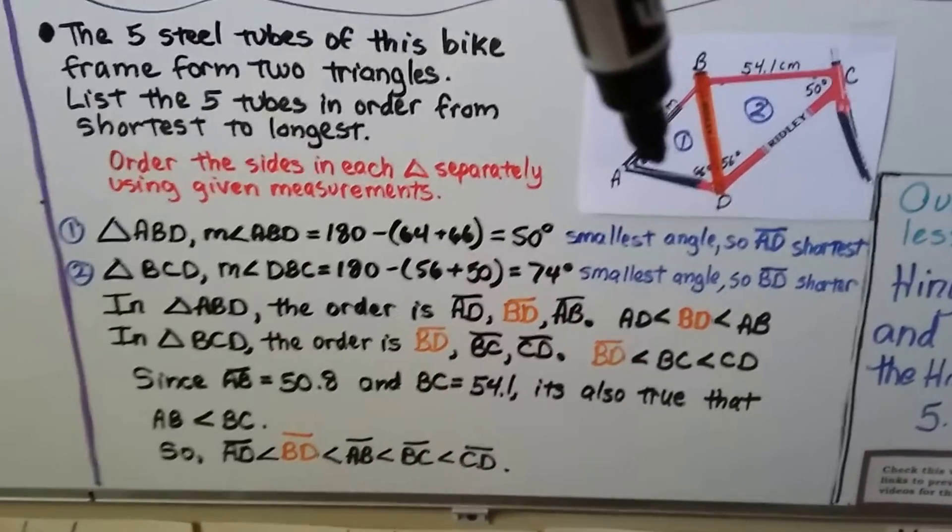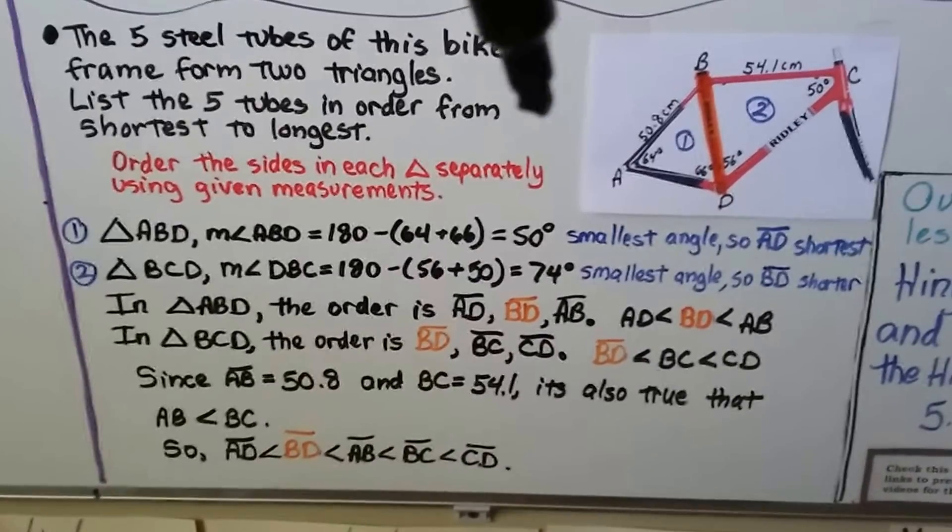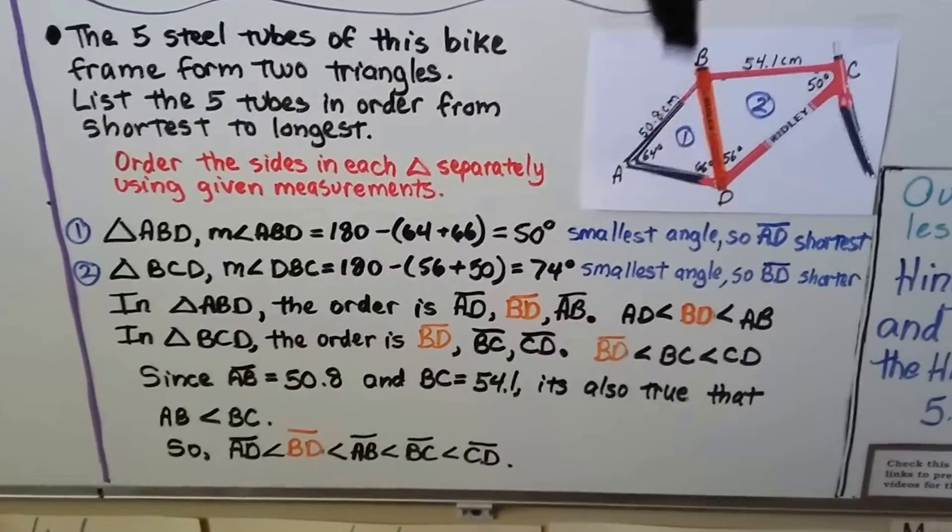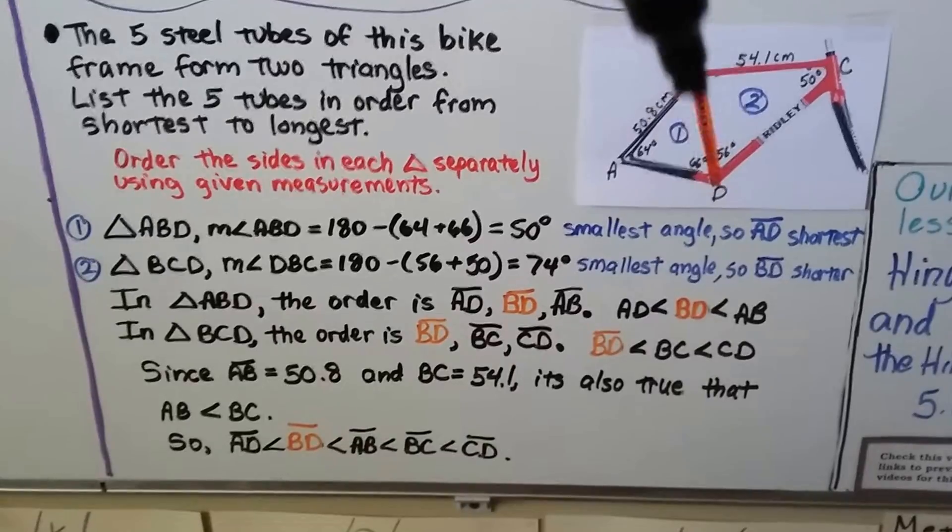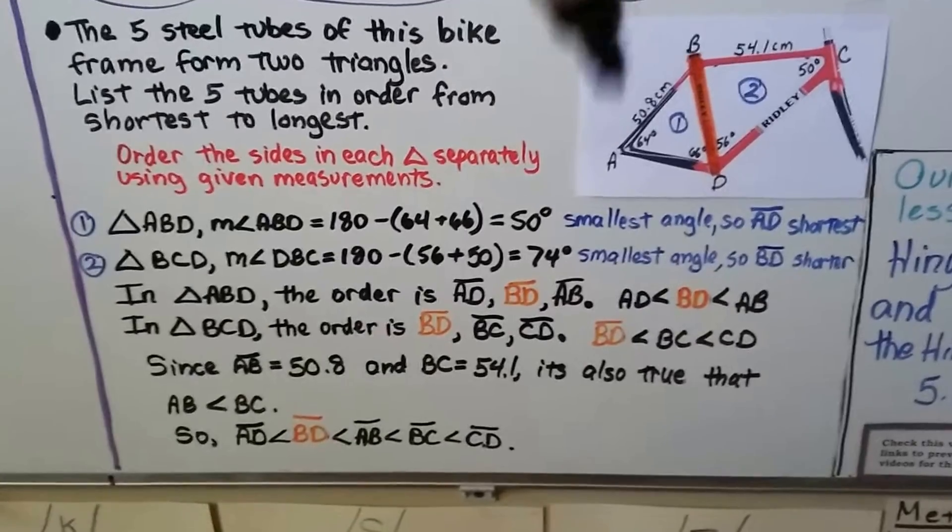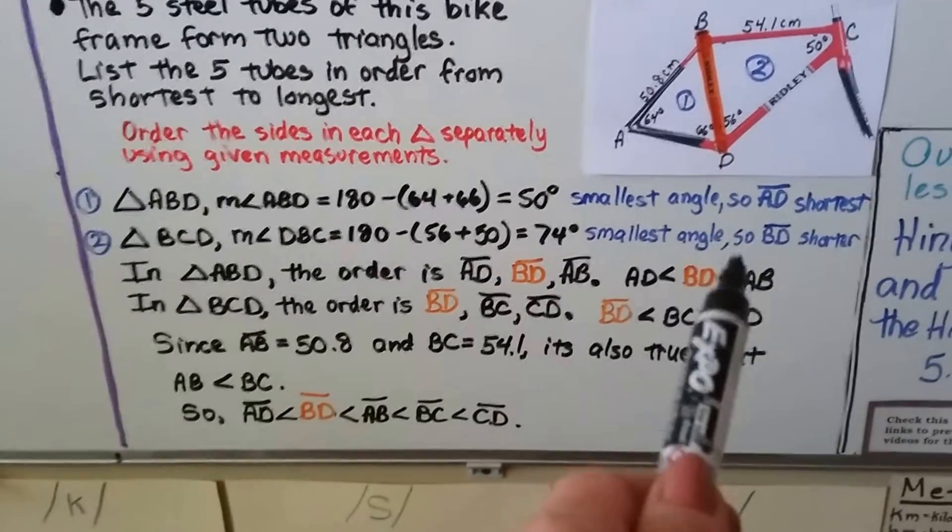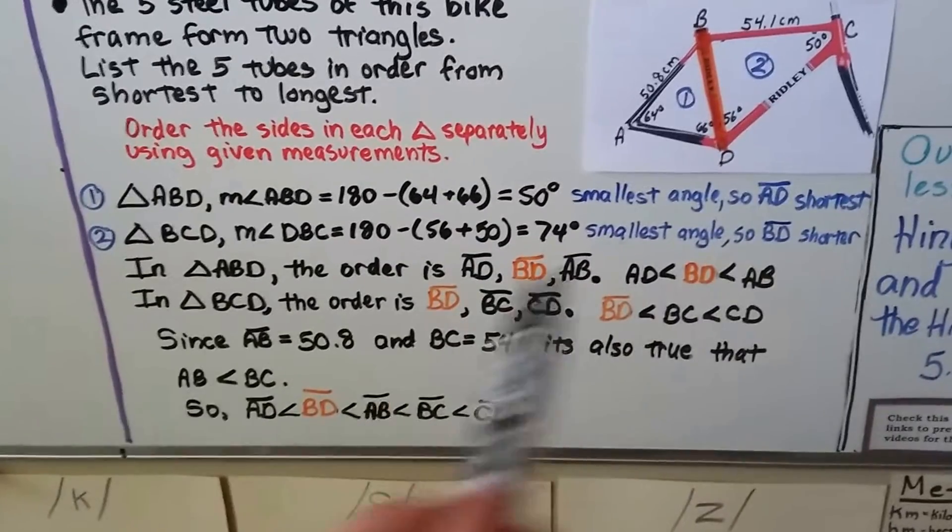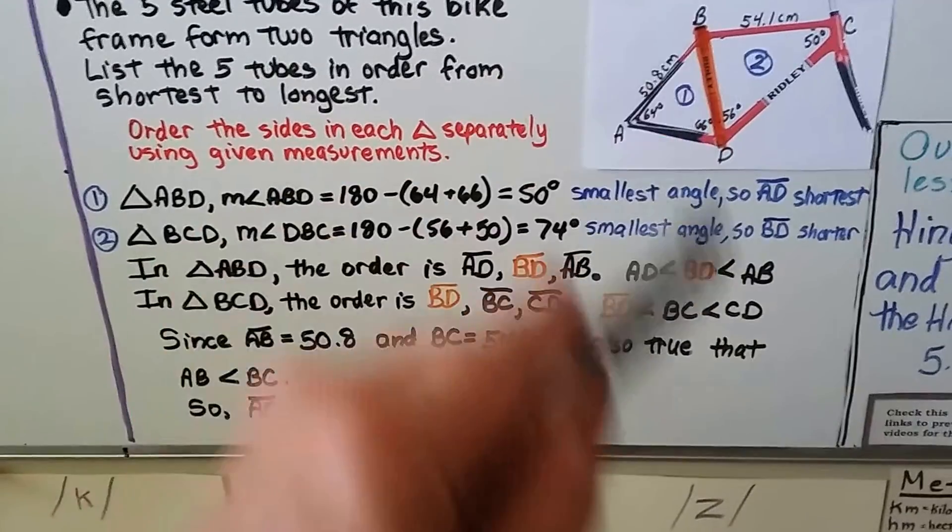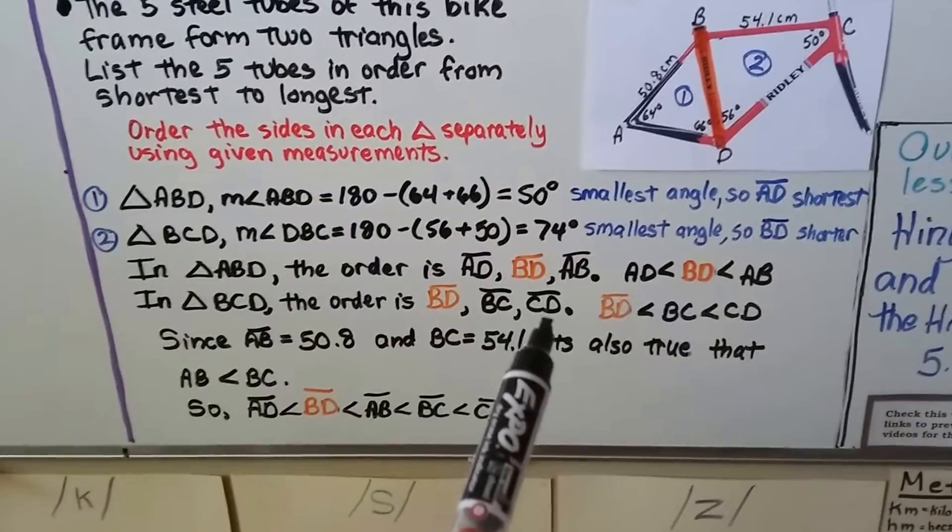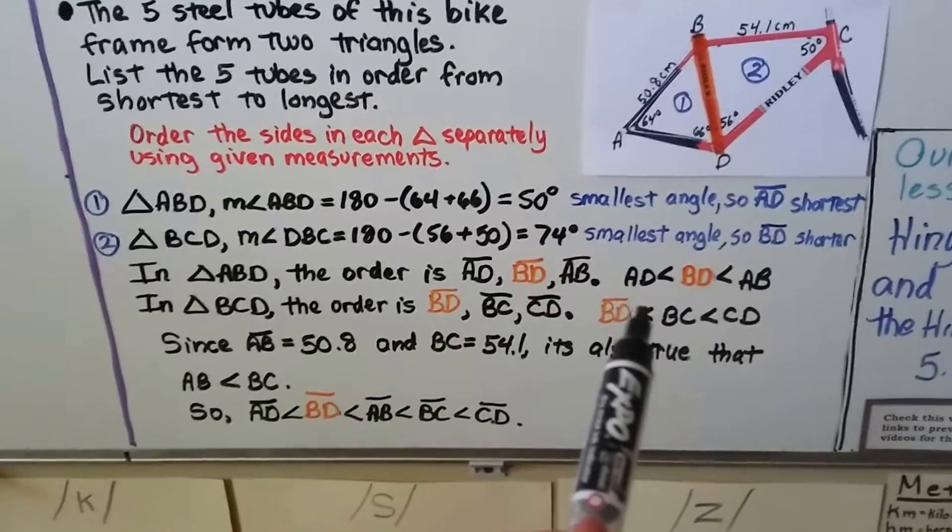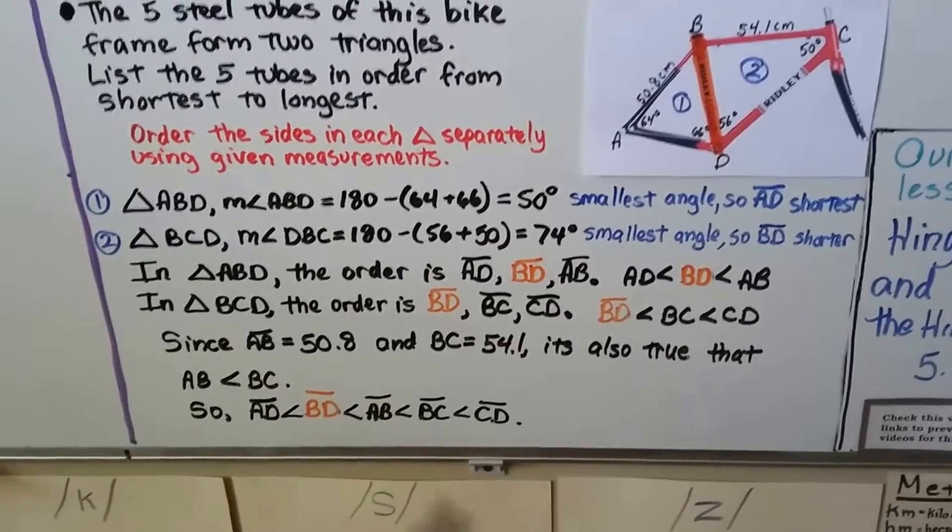In triangle ABD, the order in length is AD, then BD, this one that shares with that triangle, that's going to be our second longest one, and then we have AB. So BD is greater than AD and less than AB. In triangle BCD, the order is BD first, then BC, then CD. So BC, this one up here that's 54.1 centimeters, is greater than BD and less than CD.